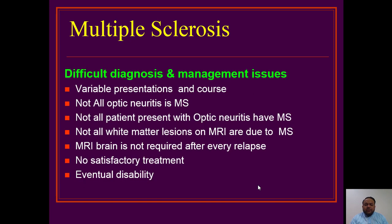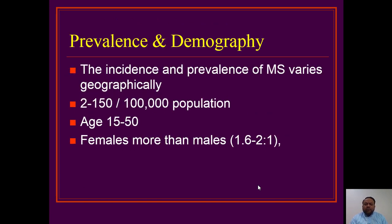Multiple sclerosis is a difficult diagnosis because it has numerous presentations. Incidence of multiple sclerosis varies geographically, with different incidence and prevalence rates according to distance from the equator, ranging from 2 to 150 per 100,000 population. It usually affects adults aged 15 to 50 years, and females are more prone to have multiple sclerosis than males.